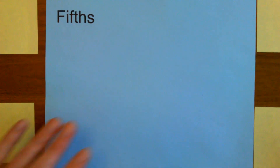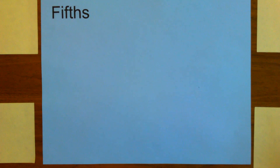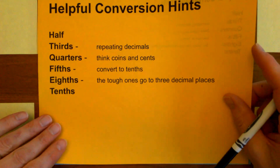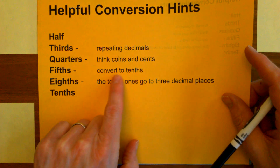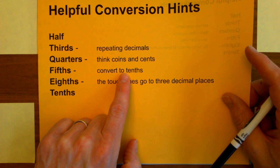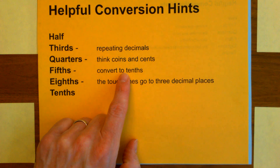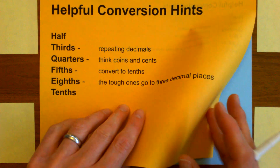Memorizing is fine — in fact, when you work with this enough, you'll memorize them pretty quickly. But it's always better to think about them instead of just memorize. Let's go to the next one: fifths. Here's going to be my tip for fifths — any time you have fifths, one easy way is to convert to tenths. That's going to be my suggestion: convert to tenths.